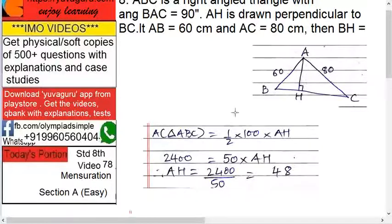Next target is AH. Now, area of triangle ABC equals to half base height again. But this time, we'll take base as BC and height as AH because this is also perpendicular. So, 2400 equals to half into 100 into AH, right? This is 100, we got it.